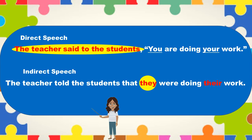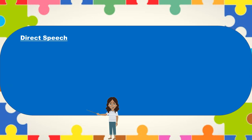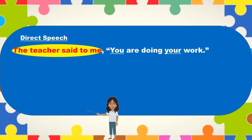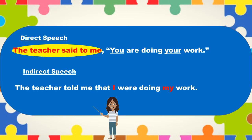And 'you' can also change to 'I' and 'my' if the listener is 'me.' Example: the teacher said to me, 'you are doing your work.' Then in indirect speech it will become: the teacher told me that I was doing my work. In short, pronouns and possessive adjectives of the second person are changed according to the object of the reporting verb.